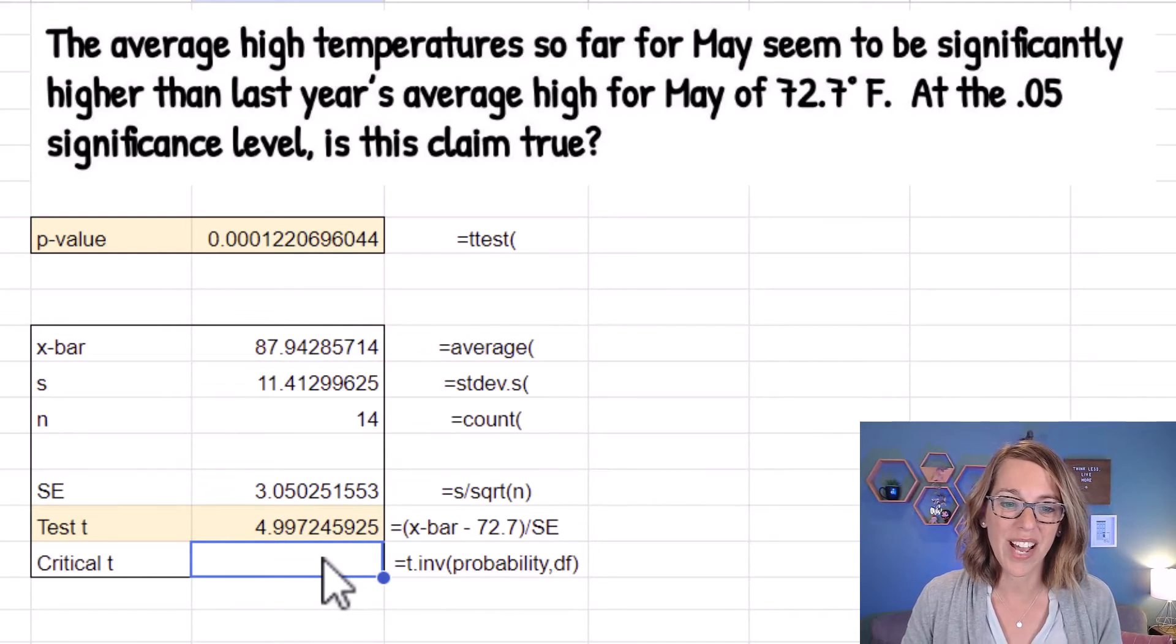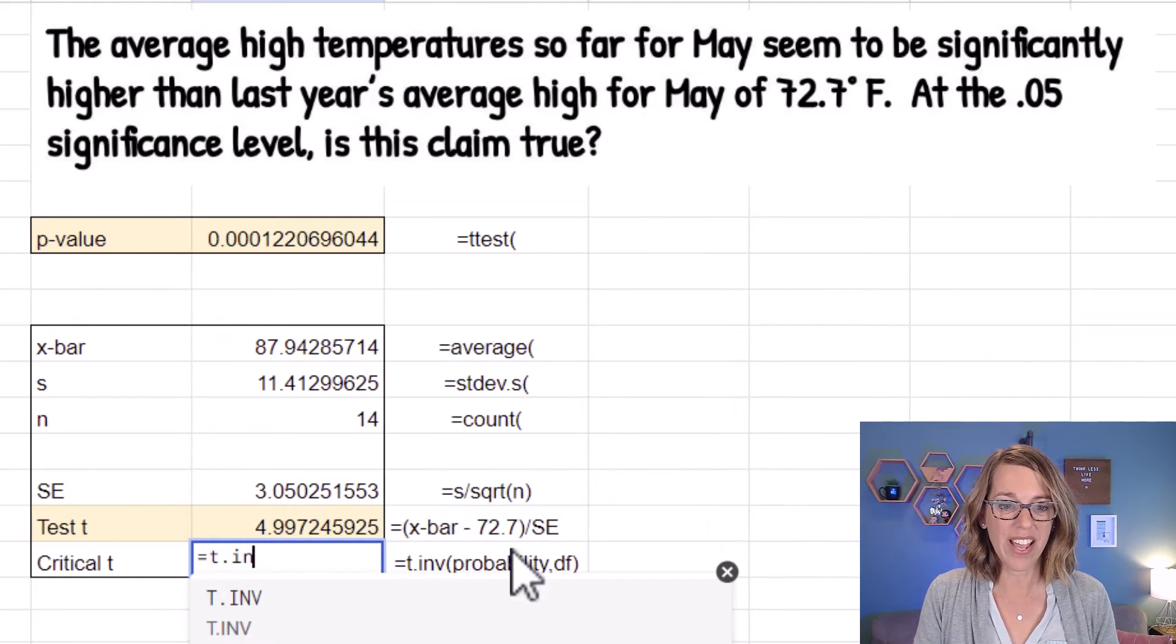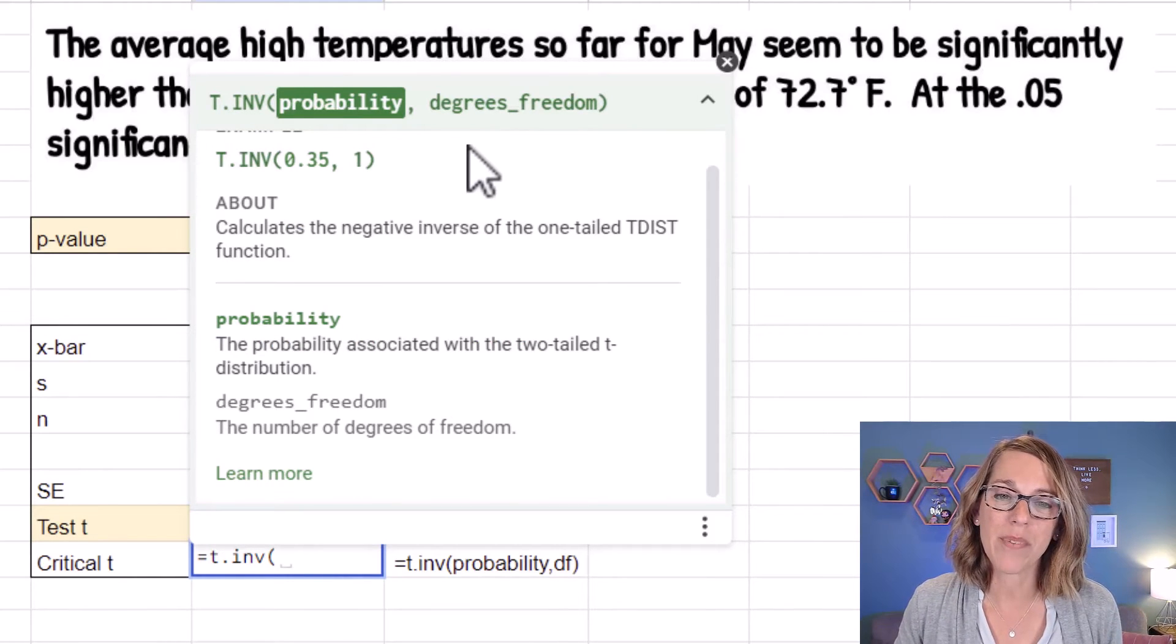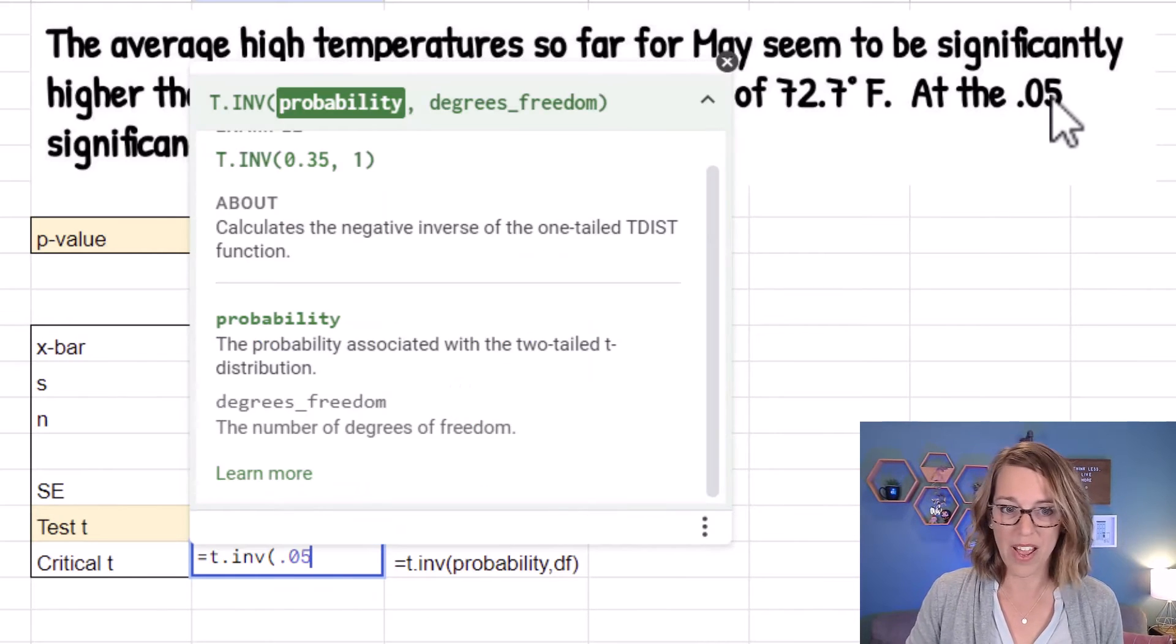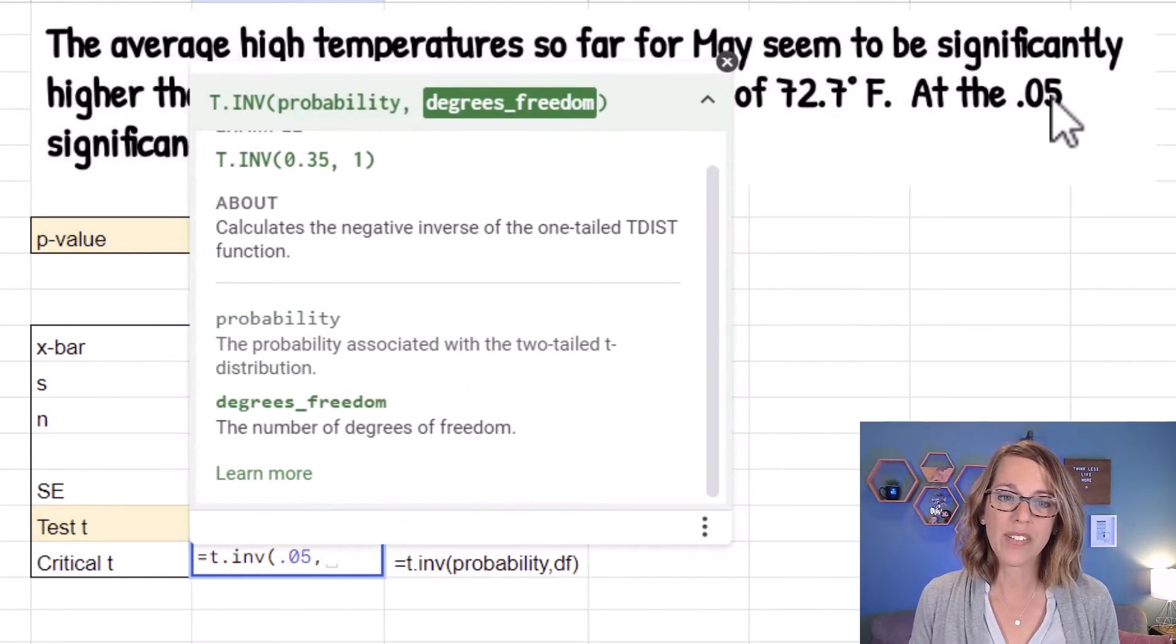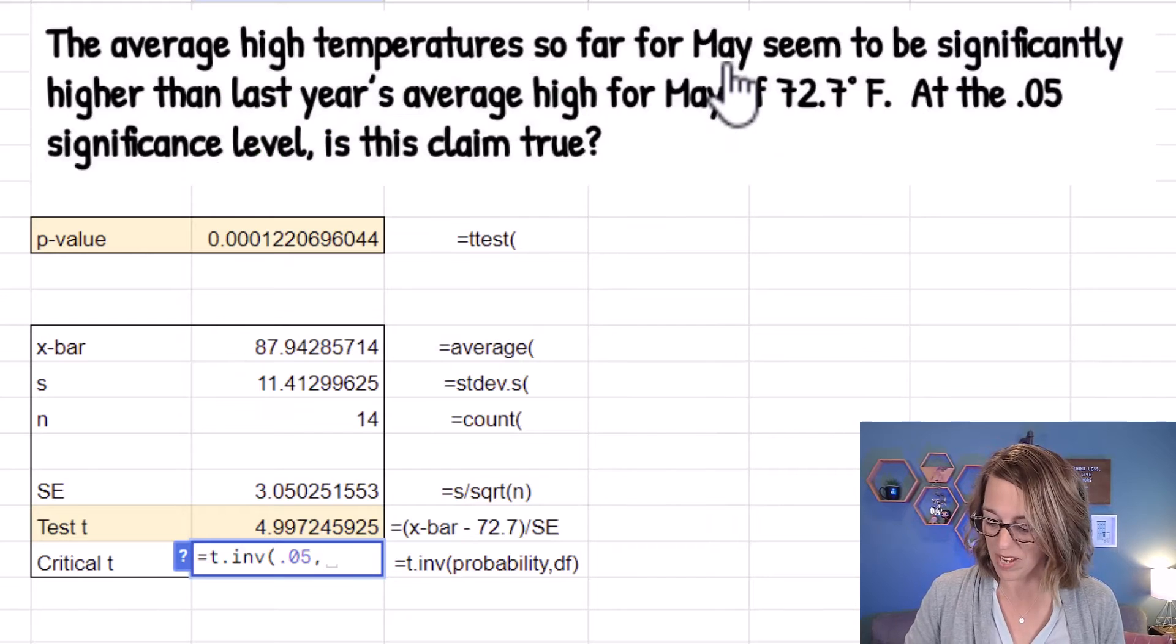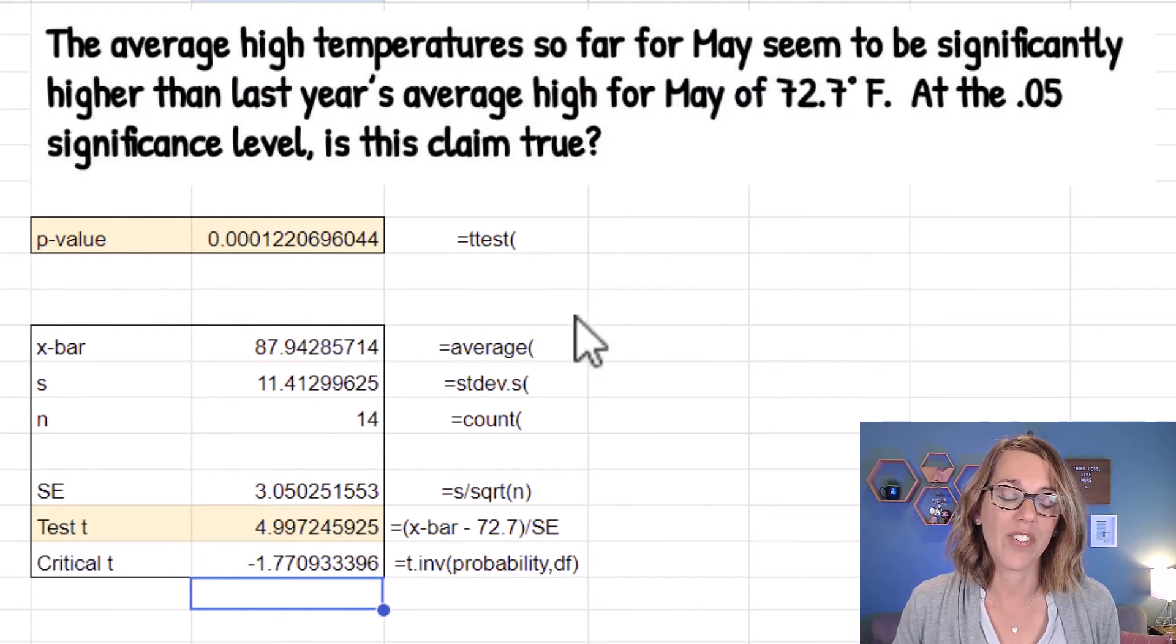To find my critical t, I'm going to use my t inverse that I'm showing over here. So equals t.inv, and it pops up right there. And it gives me my parameters. It wants the probability. This is going to be my significance level. So that's the 0.05 for my problem, comma degrees of freedom. I've got 14 values here, and I can subtract one. So 14 minus one is going to be 13 degrees of freedom, and then enter.